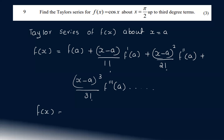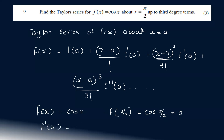Here f(x) = cos(x) and we are expanding about a = π/2. So f(π/2) = cos(π/2) = 0. For f'(x), the derivative of cos(x) is −sin(x).